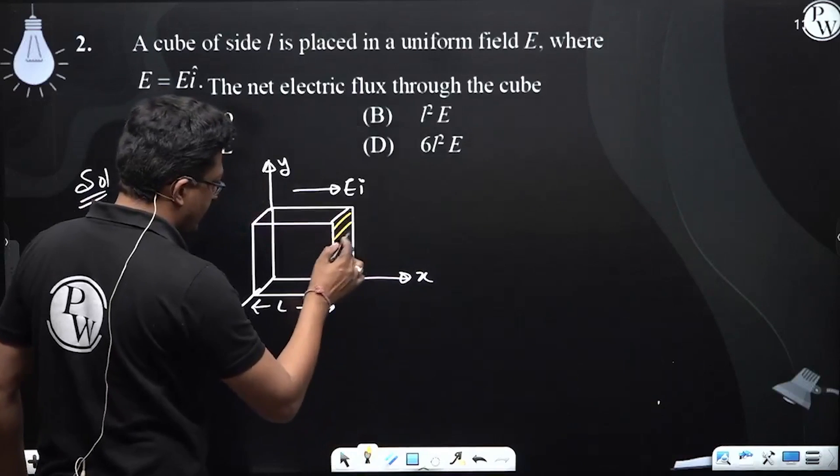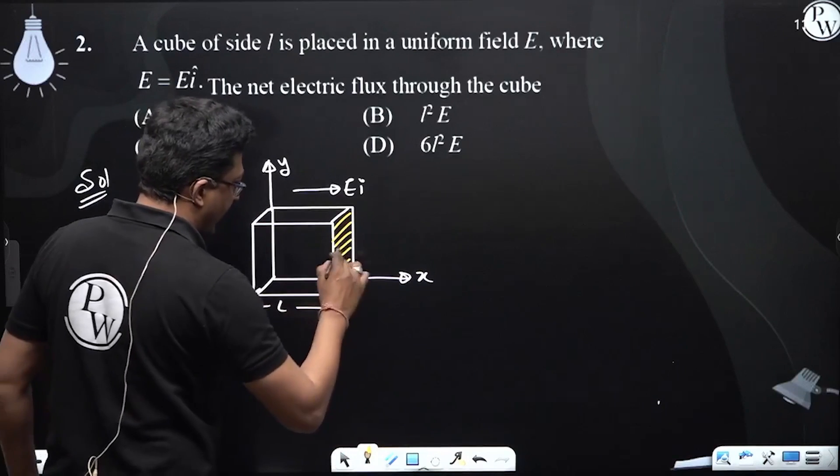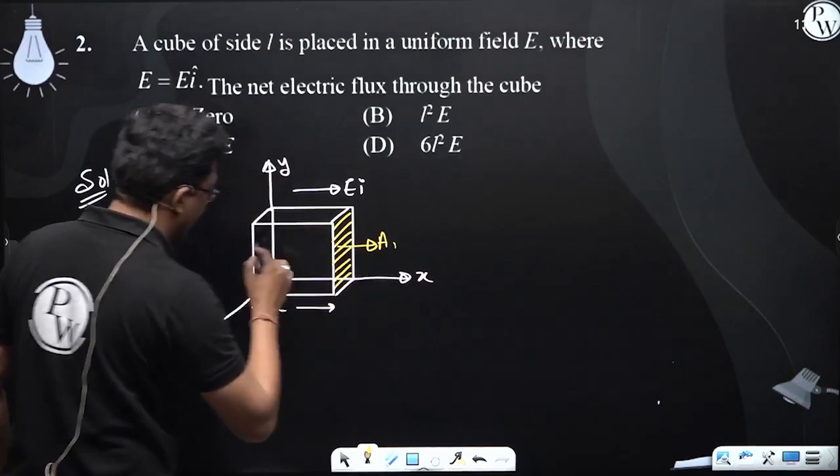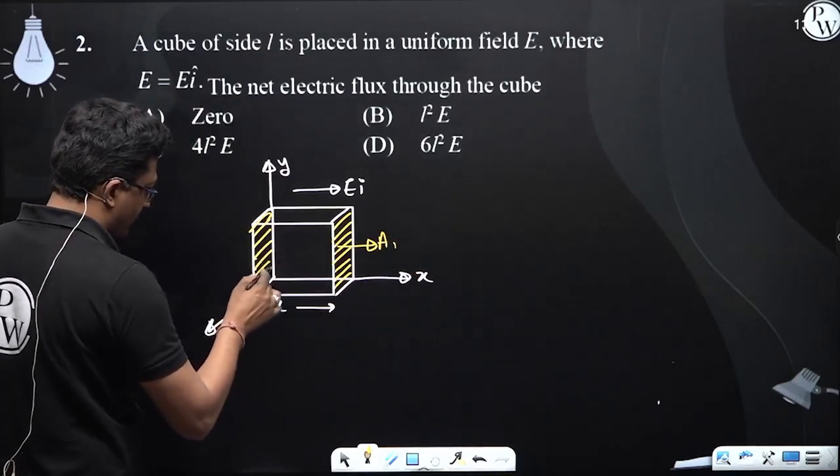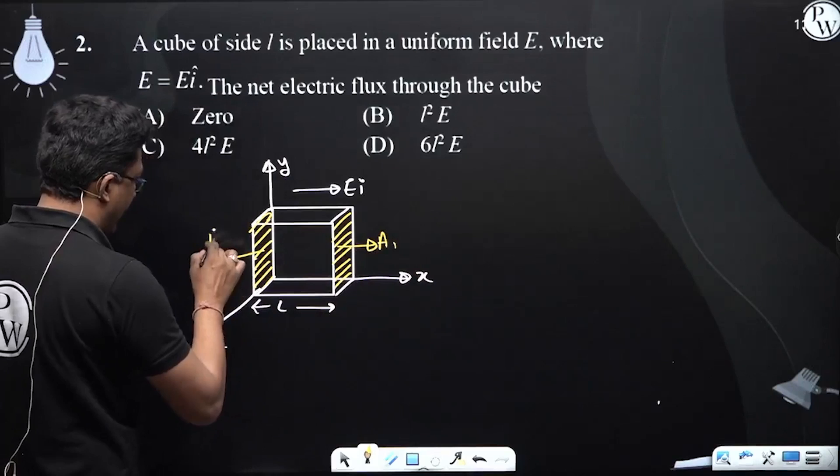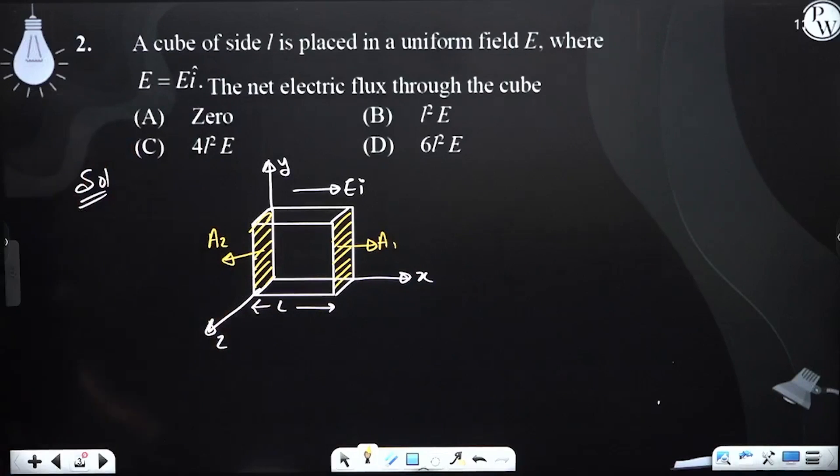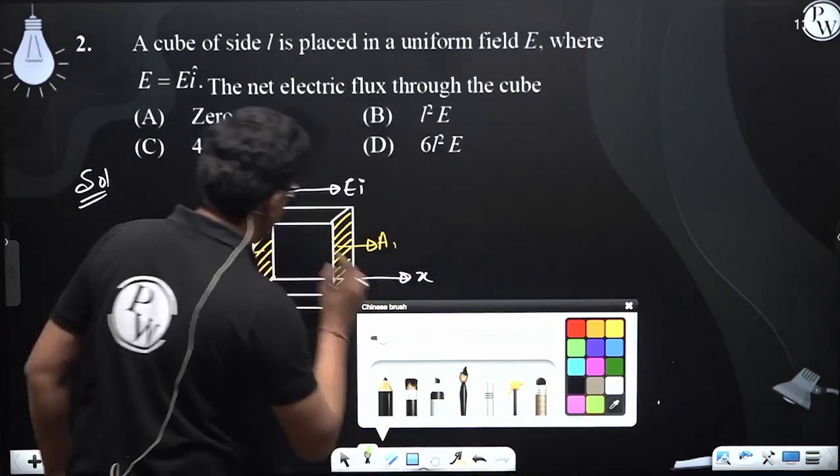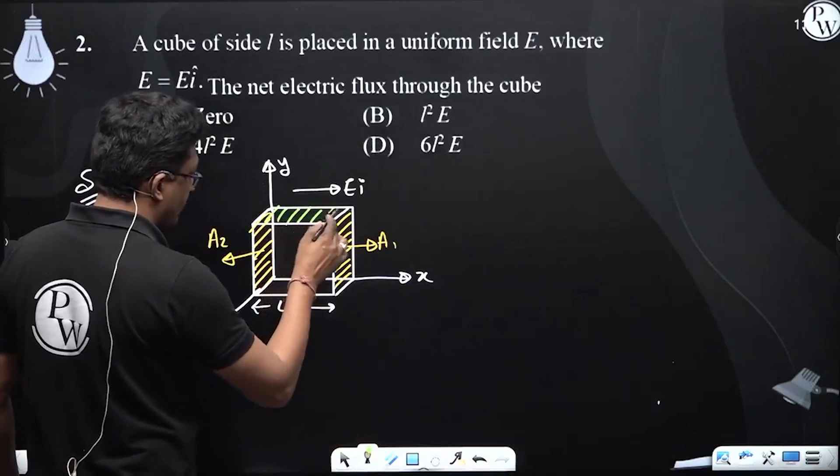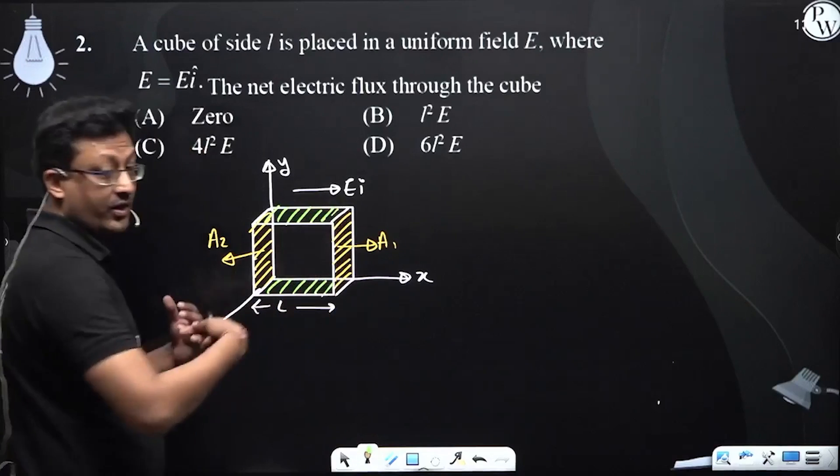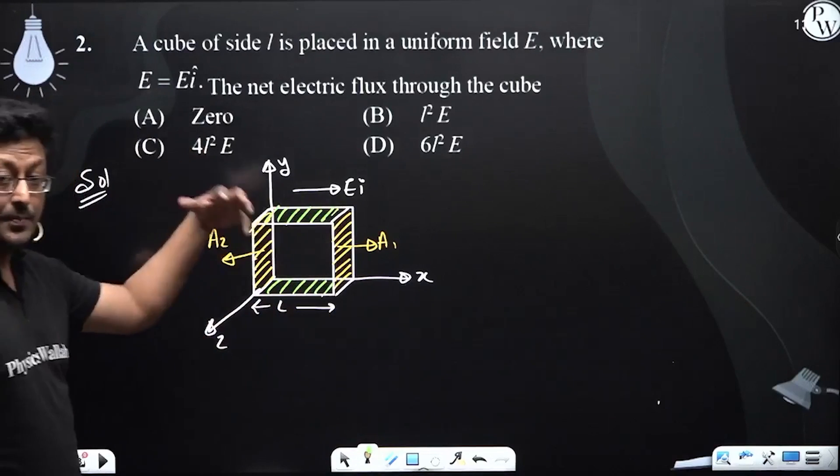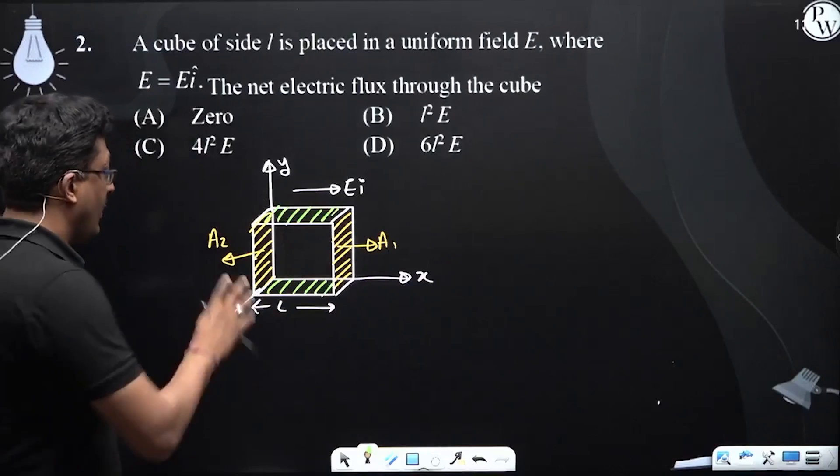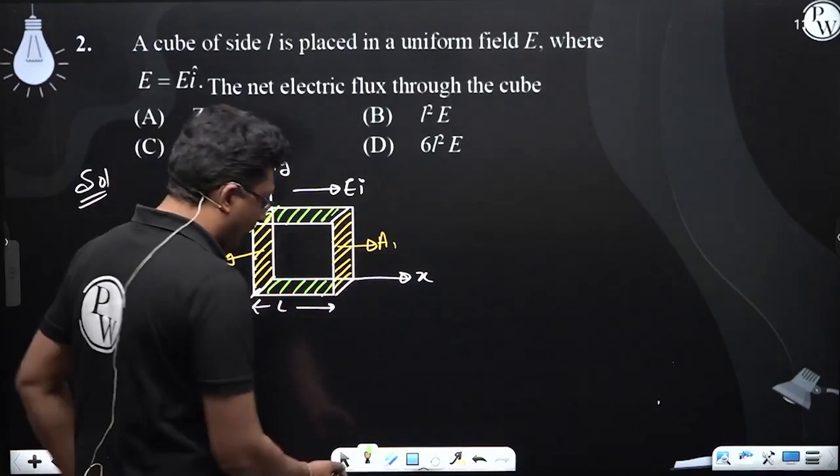The surface, its area vector will be in this direction, and the rest of the surfaces are... this one, this one, back one and front one. They all are perpendicular to the electric field. So there will be only two surfaces contributing.